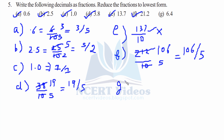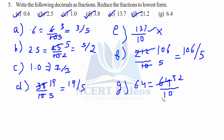Part G: 6.4 is 64 over 10, reduced by two gives 32 over 5. That is your answer.